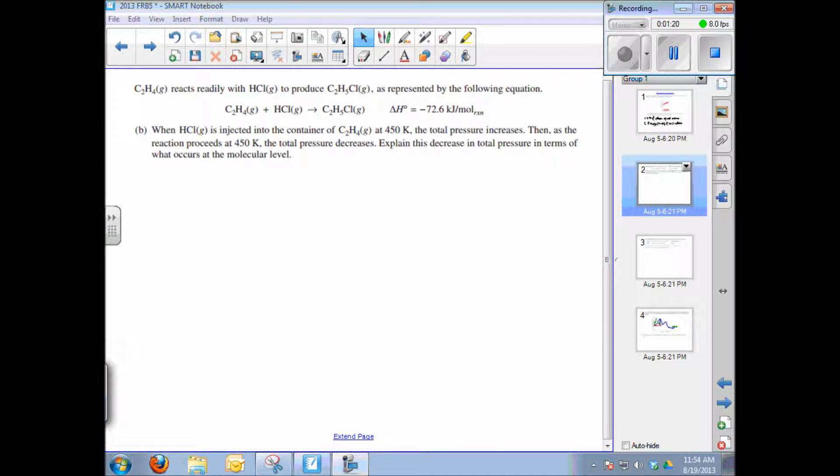The second part of this question asks the following. Ethene reacts readily with hydrogen chloride gas to produce chloroethene. When HCl is injected, the total pressure increases. That makes sense. We're just sticking more gas into the reaction vessel, so the pressure goes up at first. But then, as the reaction proceeds at a certain temperature, this pressure begins to decrease. Why?